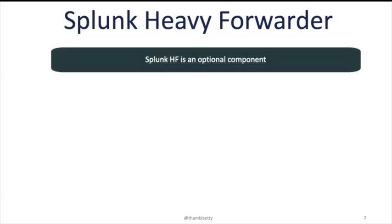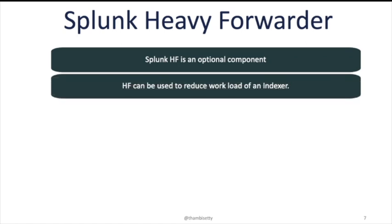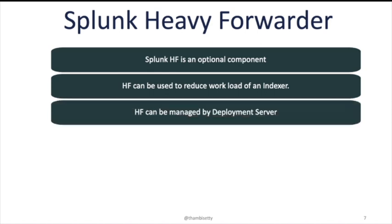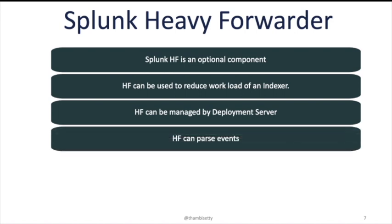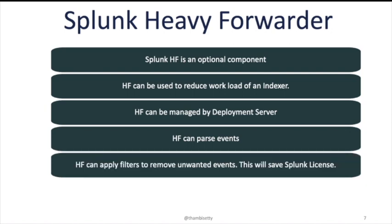Splunk HF is an optional component because the HF role can be added to an indexer if the Splunk deployment is very small where not much data is indexed per day. But as a Splunk consultant, I recommend Heavy Forwarders to offload the indexer's workload. HF can be managed by deployment server — updating or creating new configurations or applications on Heavy Forwarder can be done by deployment server. HF can parse events, and event parsing can be done by Heavy Forwarder or by the indexer if there is no HF. HF can apply filters to remove unwanted events, which will save Splunk license. Splunk license works based on how much volume of data we are indexing per day.